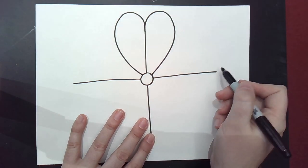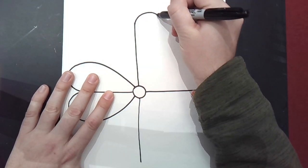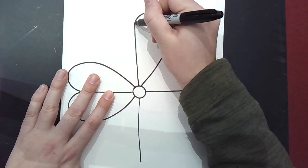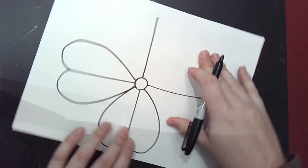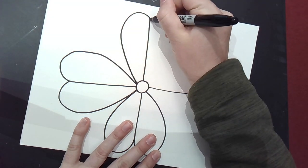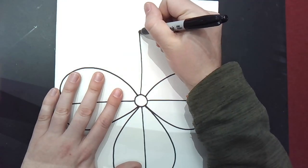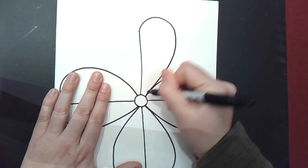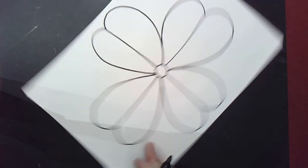So, the easiest way for me to do this, instead of working sideways now, I like to rotate my page, make half a heart, make the other half, rotate my page, make half a heart, and the other half. And there's our clover.